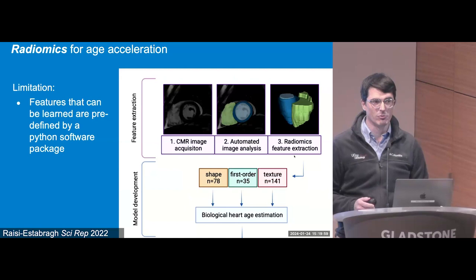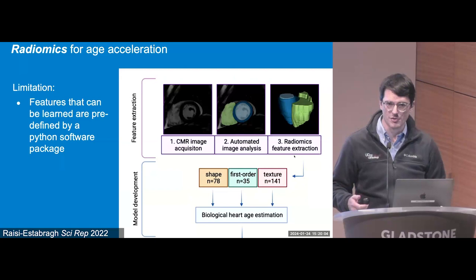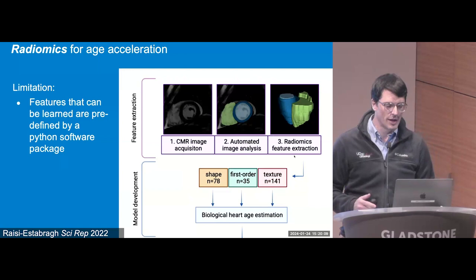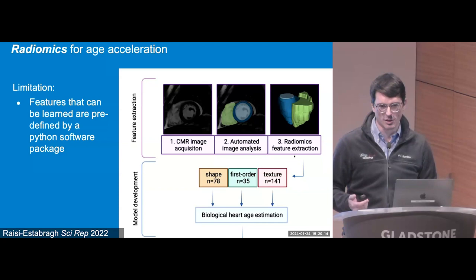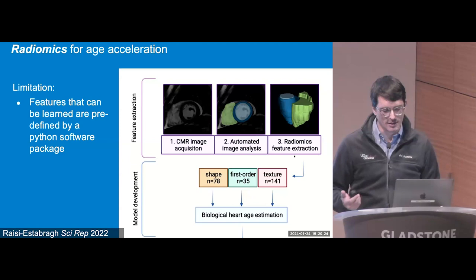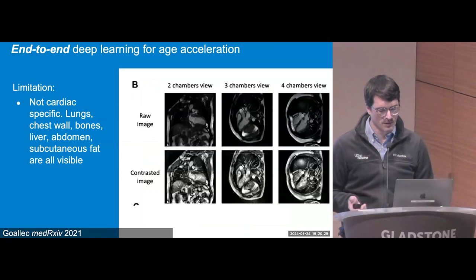The second approach uses radiomics. The first pass is to identify cardiac structures using semantic segmentation — labeling all pixels in the heart — and then computing various parameters using the off-the-shelf Python package PyRadiomics. This gives more abstract variables that don't necessarily have a direct meaning, but tend to capture information like texture, brightness, shape, and size, which can then be used to predict age.